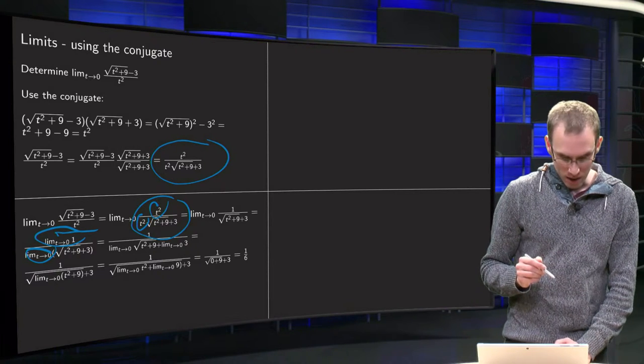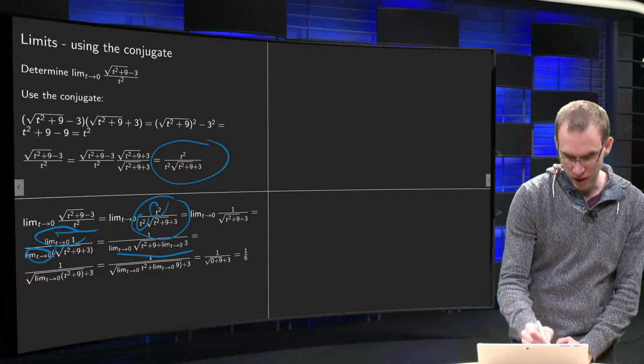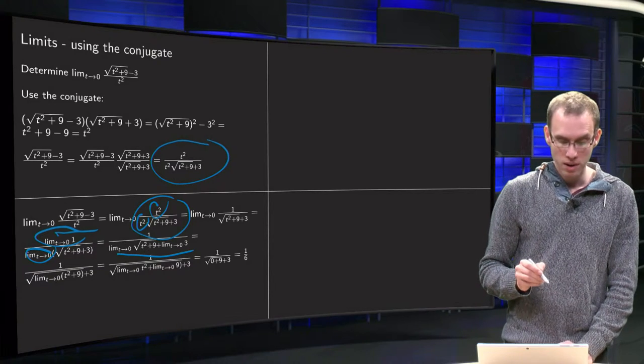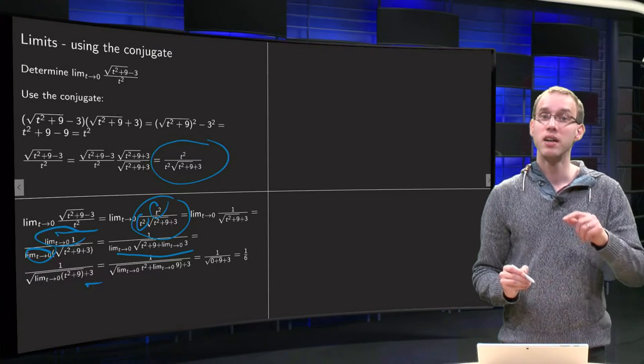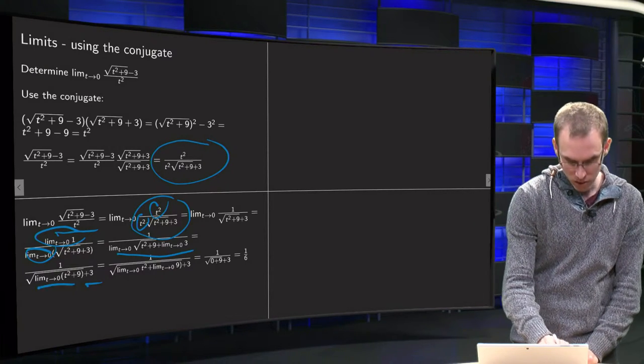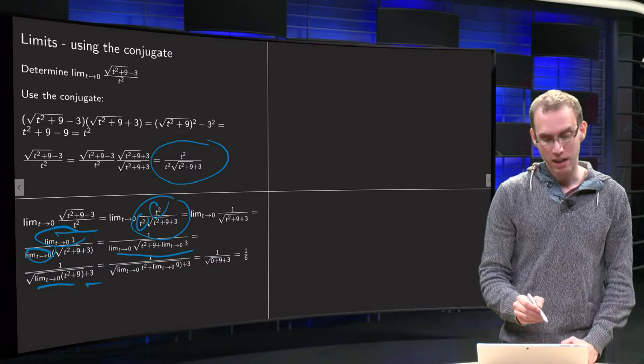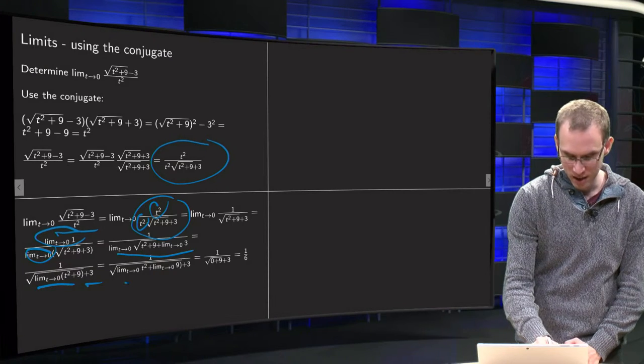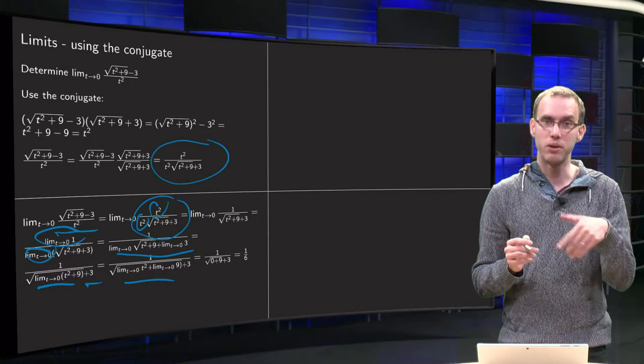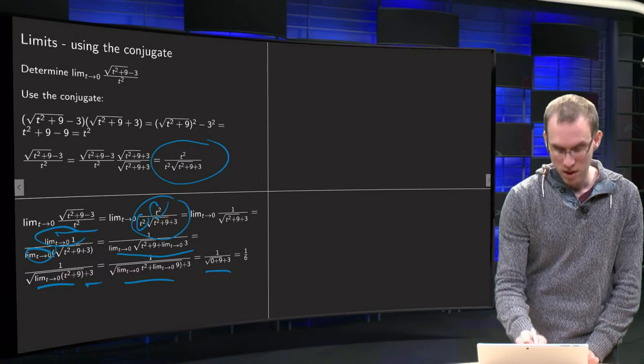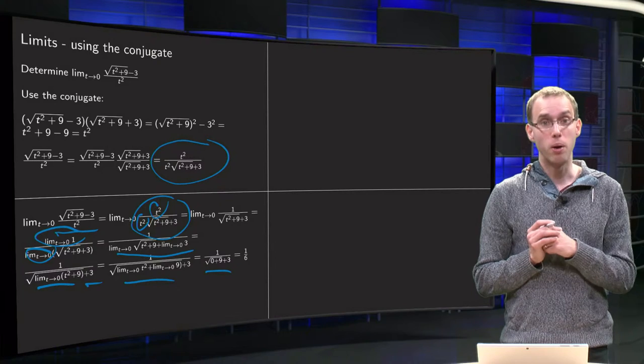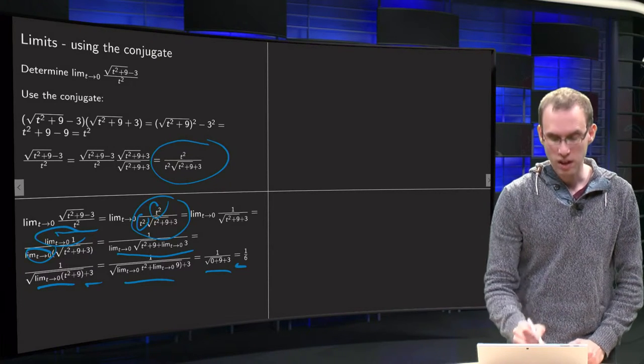The numerator is easy, of course. Then we apply the sum rule over here. Limit t to zero of square root of t squared plus 9 plus limit t to zero of 3. Well, the second limit equals 3, that one is standard. Then we can apply the root law. We can take the limit inside the square root. That is what we do over here. And then we can apply the sum rule again. Limit of the sum equals the sum of the limits. You can just use the power law again if you want. And you get then finally the square root of zero plus 9 plus 3 equals 1 over 3 plus 3 equals 1 over 6. There we have our limit.